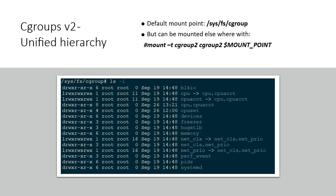In cgroups version 1, the ability to mount different controllers against different hierarchies was intended to allow great flexibility for application design. In practice, though, the flexibility turned out to be less useful than expected and in many cases added complexity. Therefore, in cgroups version 2, all available controllers are mounted against a single hierarchy. In contrast to cgroups v1, v2 has a single virtual file system because of the single unified hierarchy.